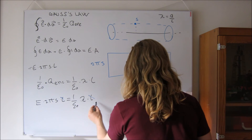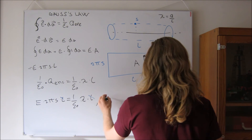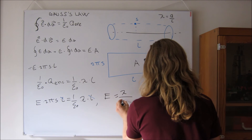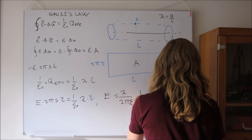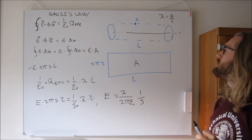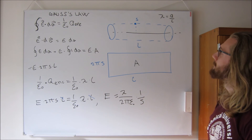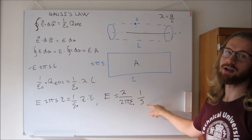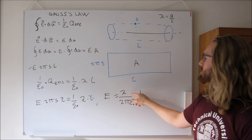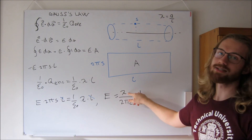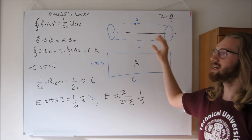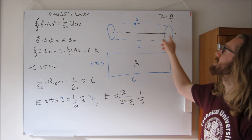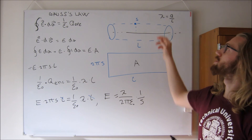Simplifying, the electrical field at a distance s is given by the linear charge density lambda over 2πε₀, times 1/s. The field scales as 1/s rather than the familiar 1/s² because lambda is a linear charge density with units of charge per length. This is the electrical field at distance s from an infinitely long straight wire with constant linear charge density.